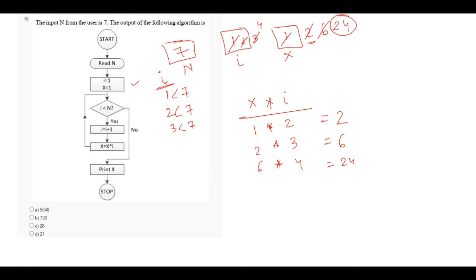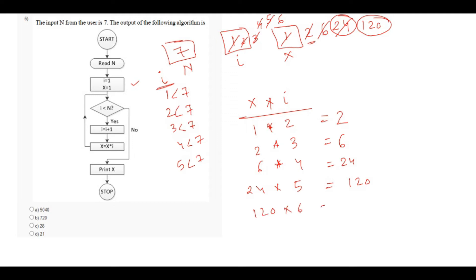Again, 4 less than 7, so we have to increment the value of i — that will be 5. Now the value of x will be 24 into 5, that is 120. So it will be changed to 120. Again, 5 less than 7, and it will be incremented to 6. So 120 into 6 equals 720. The new present value of x will be 720.